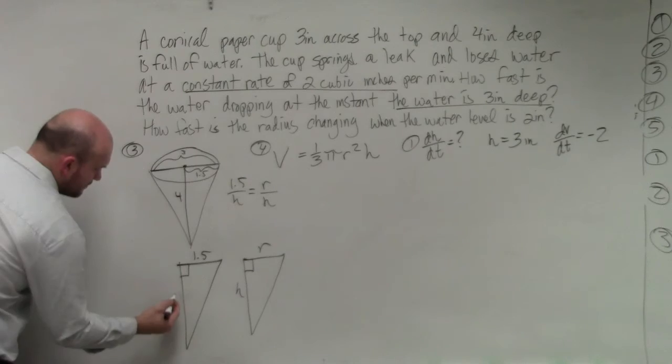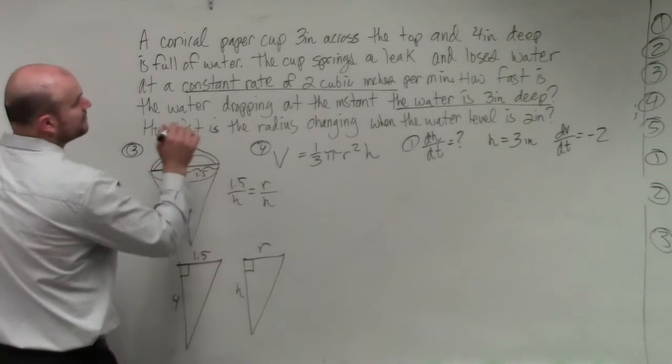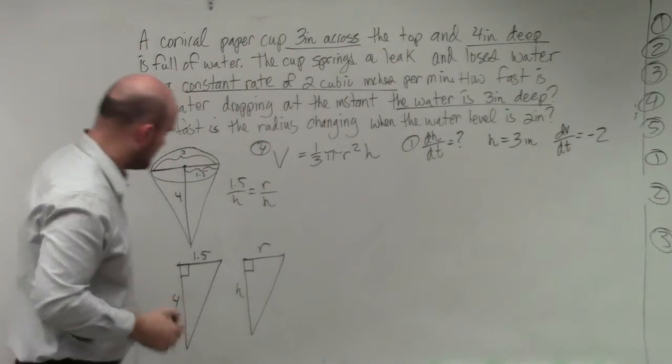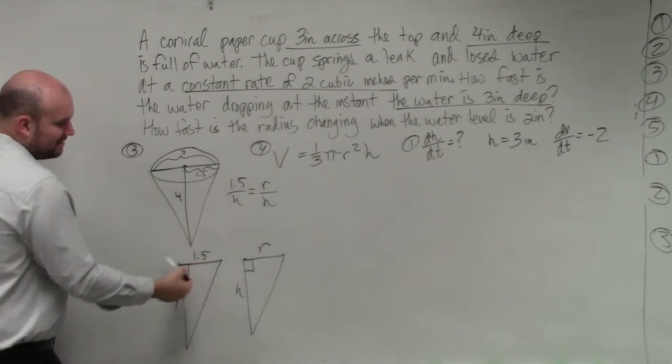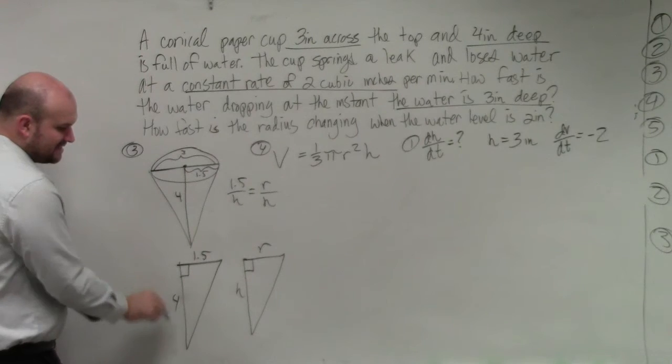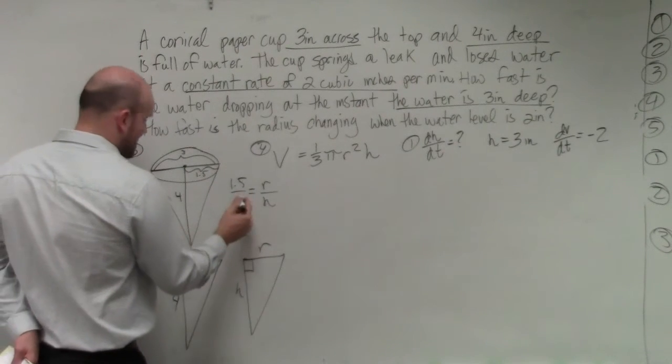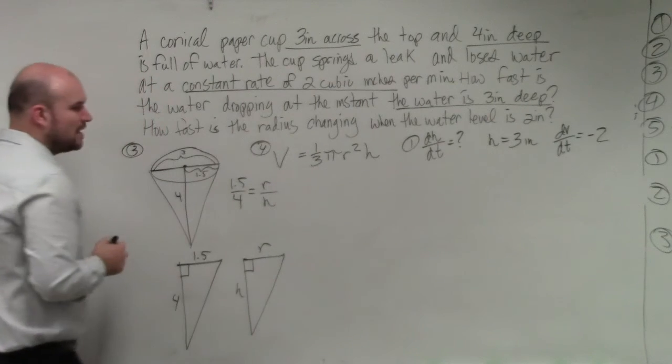That's 4. I forgot to write that in. Okay, 3 inches across, 4 inches deep. Underlining things might be important. Sorry, as the radius is 1.5, the height is 4 inches. So therefore, we have r is to h. So we have 1.5 is to 4 as r is to h.